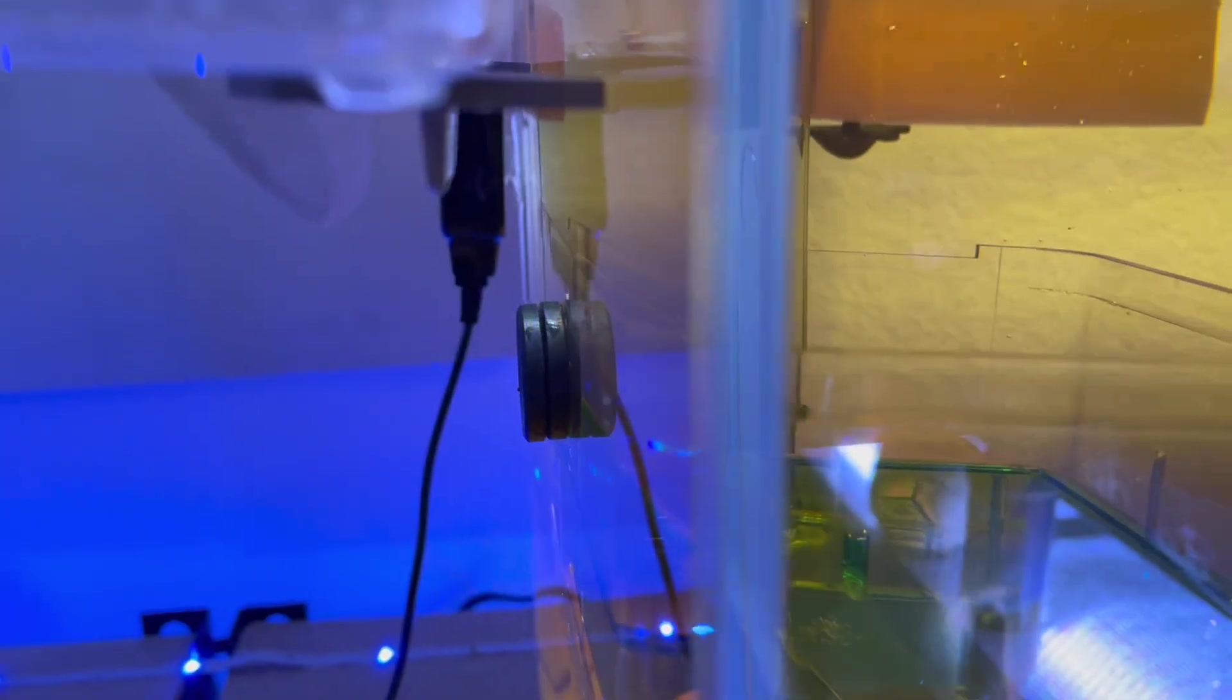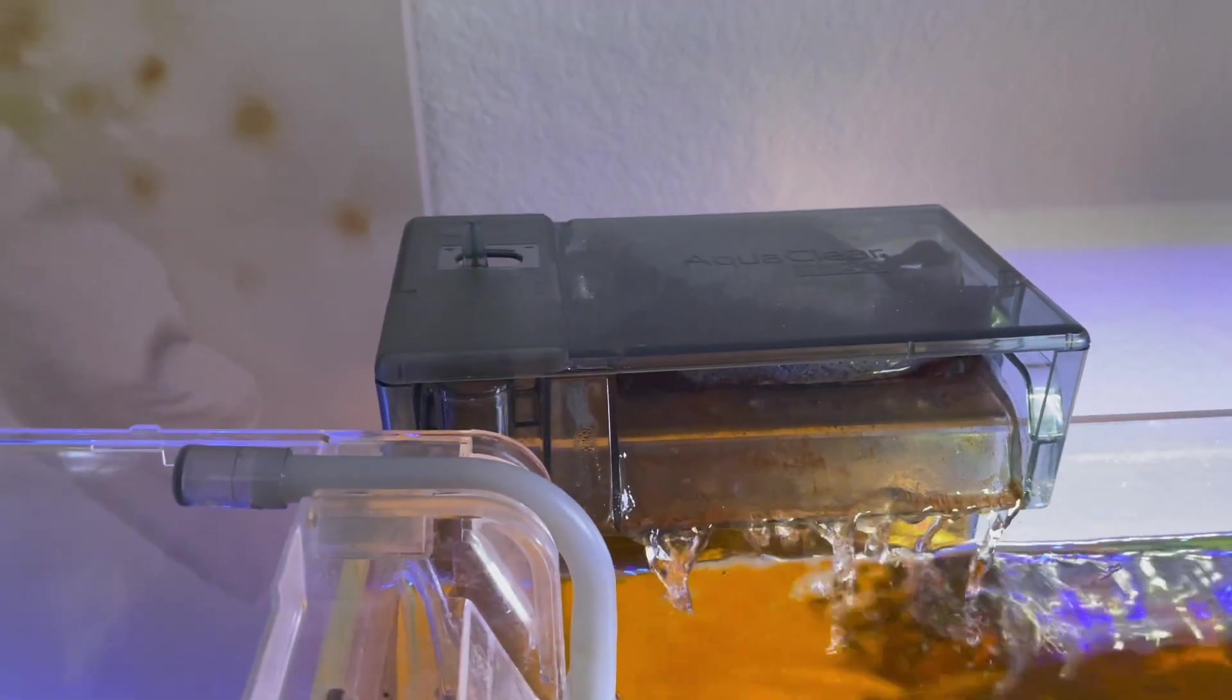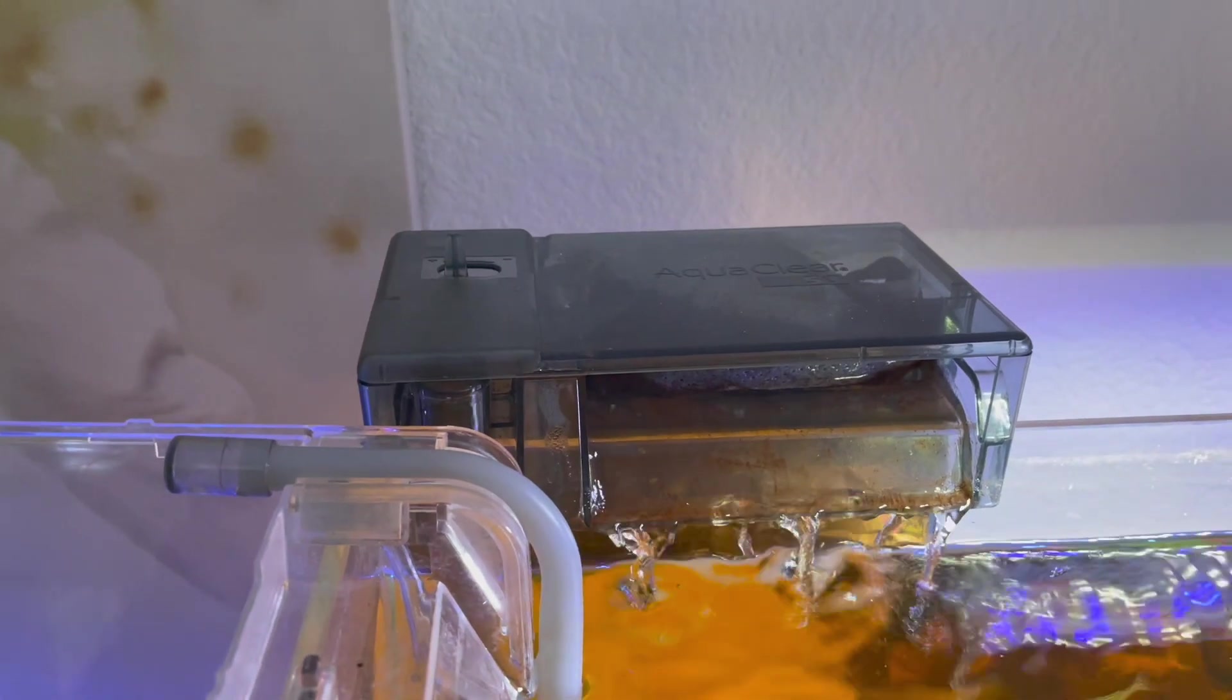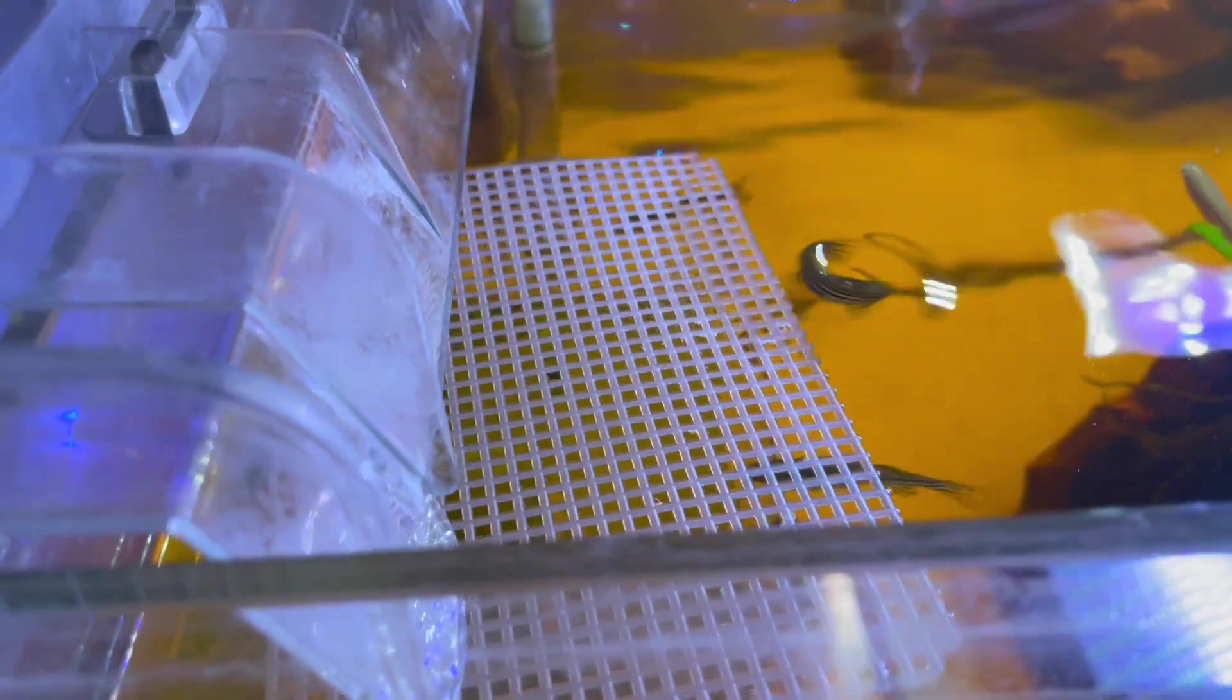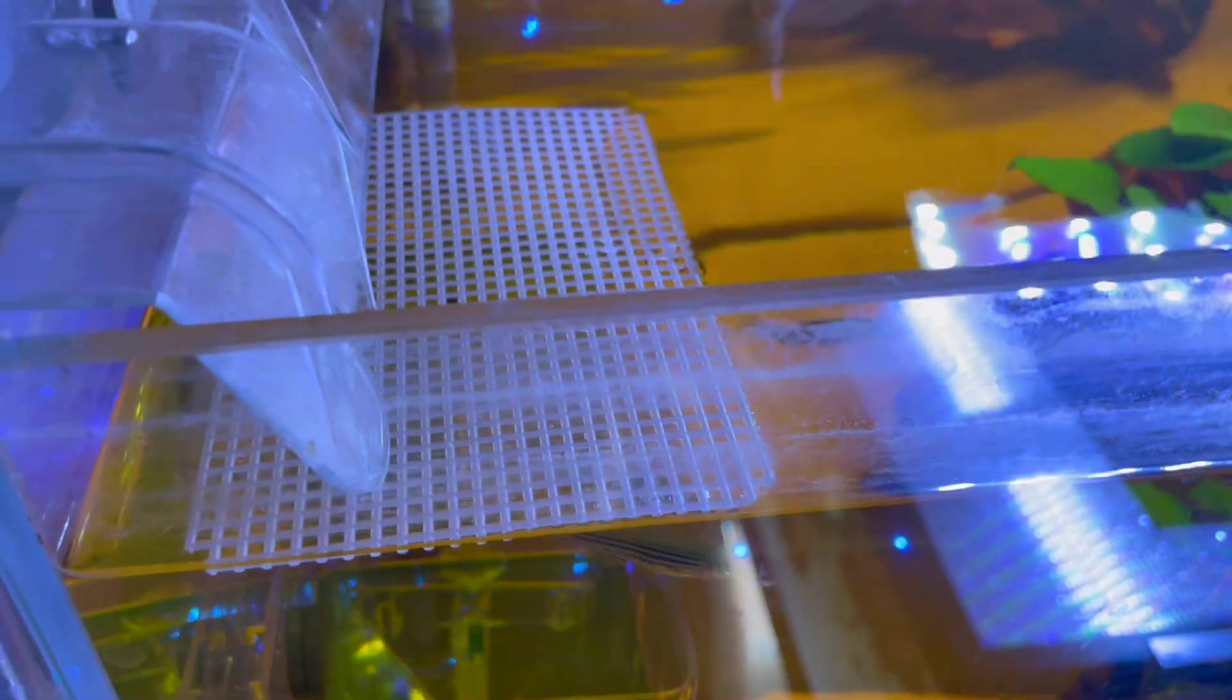All right, I got the Penn-Plax breeder box right against the glass right here. I'm using ceramic magnets, should be okay. Don't be too concerned with the ceramic, it's the same material as the propellers in your filters right here. So I got this all situated, I'm gonna get this mesh in place. I got a handful of pebbles right here to hold it down. Let me get it in right now.